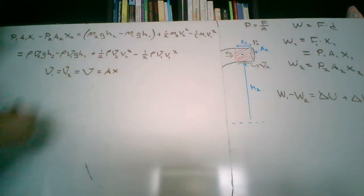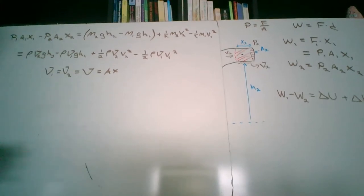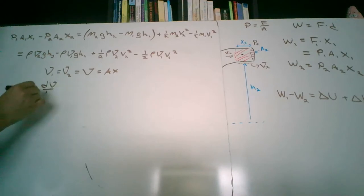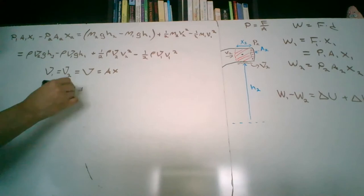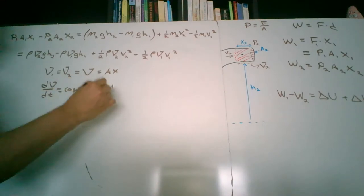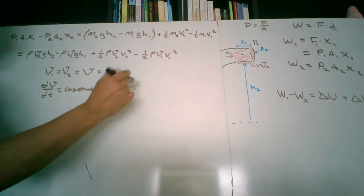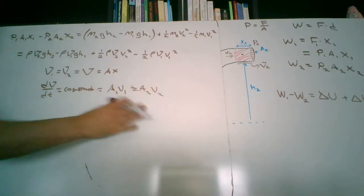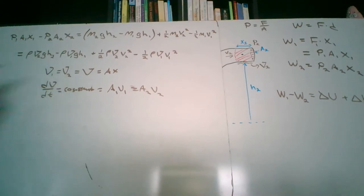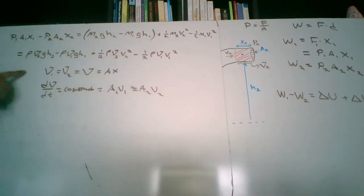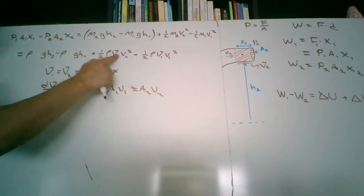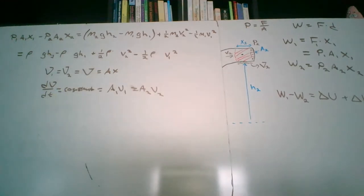Volume equals area times distance: 𝒱 = A·x. Also, dV/dt equals a constant, which implies A1·V1 equals A2·V2. Because 𝒱1 equals 𝒱2, we can get rid of the volume term in all four places — in the potential energy terms and the kinetic energy terms. We divide volume from both sides.